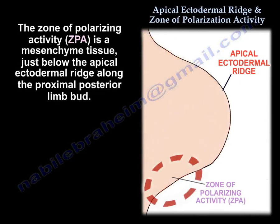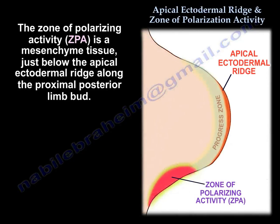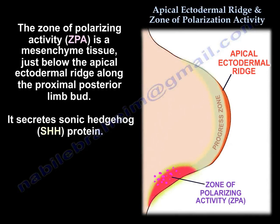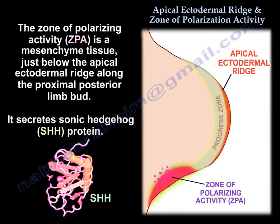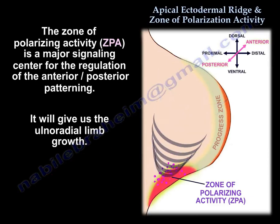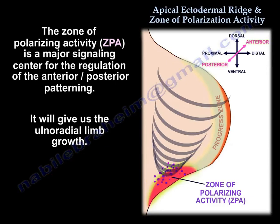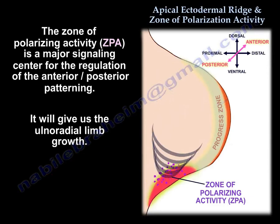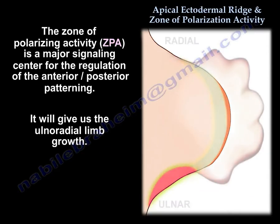The Zone of Polarizing Activity (ZPA) is situated just below the Apical Ectodermal Ridge, along the proximal posterior limb bud. It secretes sonic hedgehog and is a major signaling center for the regulation of anterior-posterior patterning, governing radial limb growth.